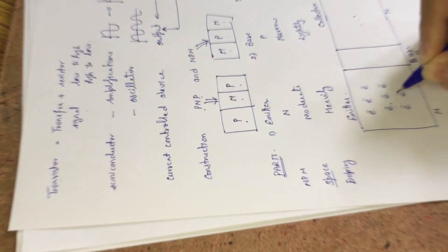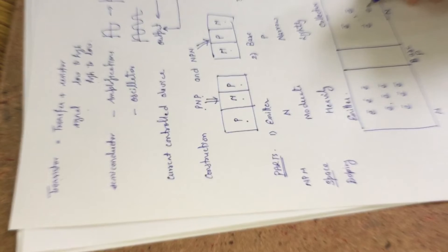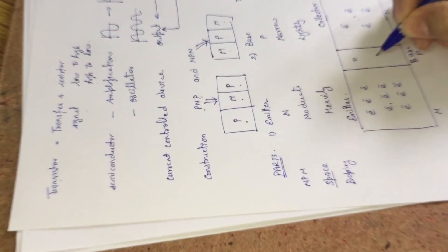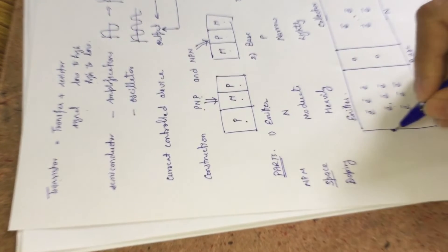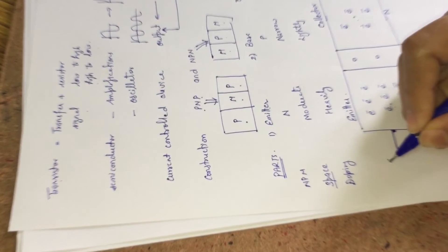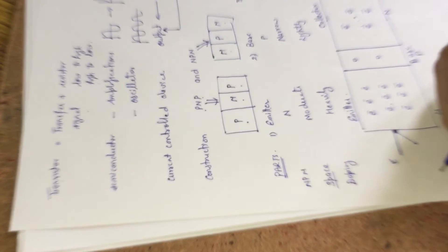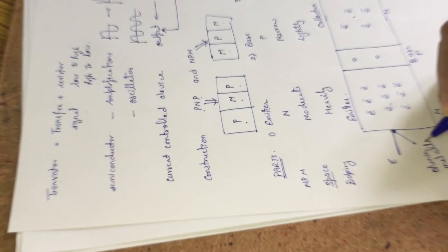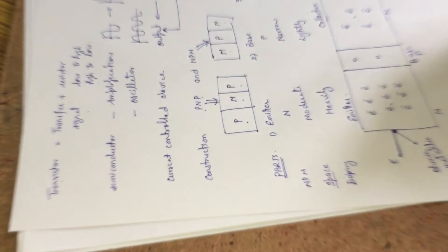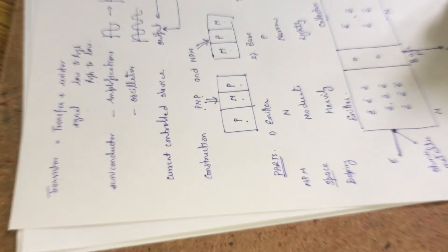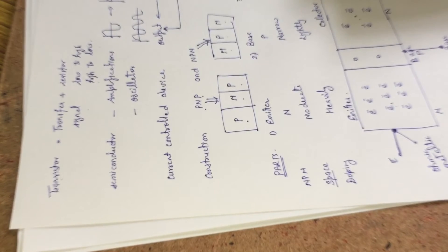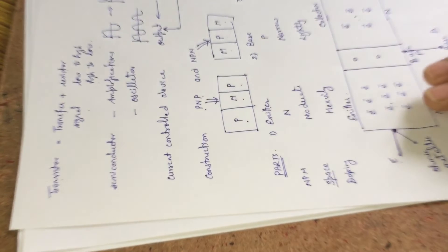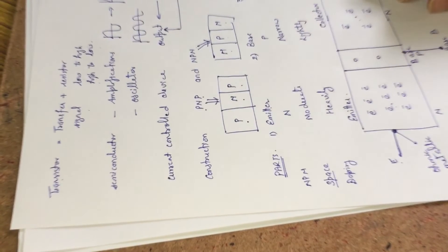The collector region is more spacious compared to the emitter region, and the doping concentration in the emitter is very large compared to the collector doping concentration. The base is very lightly doped and is a very narrow region. We get three terminals from each region — the emitter terminal, the base terminal, and the collector terminal — indicated by E, B, and C respectively. These are ohmic metallic contacts from where we connect our voltage or current source.